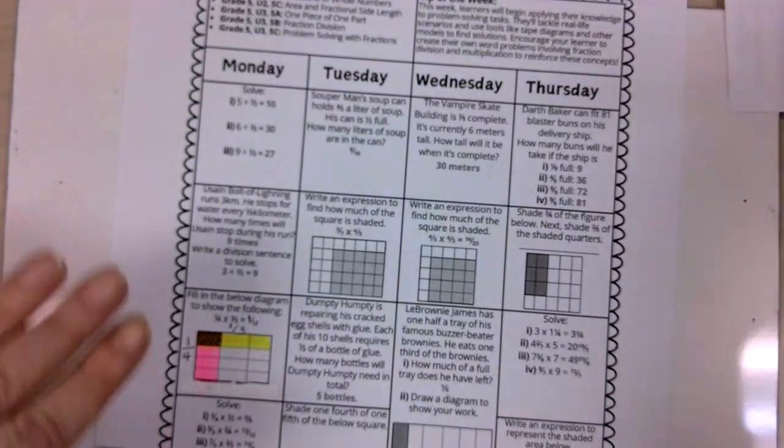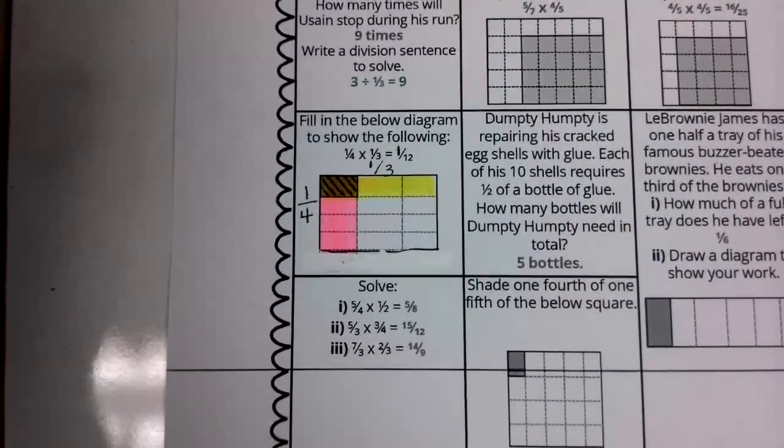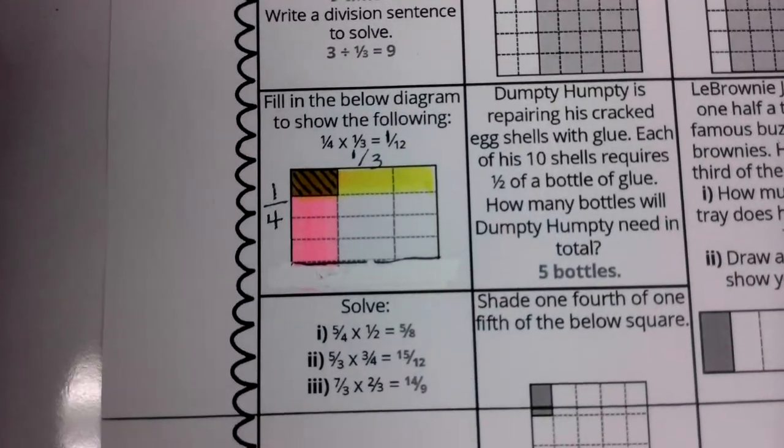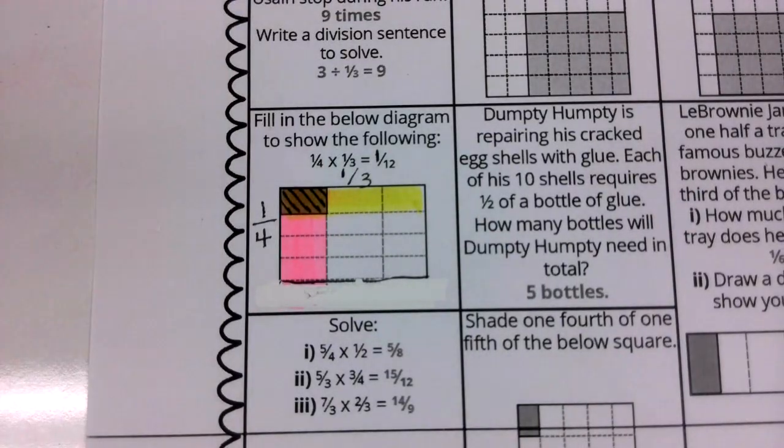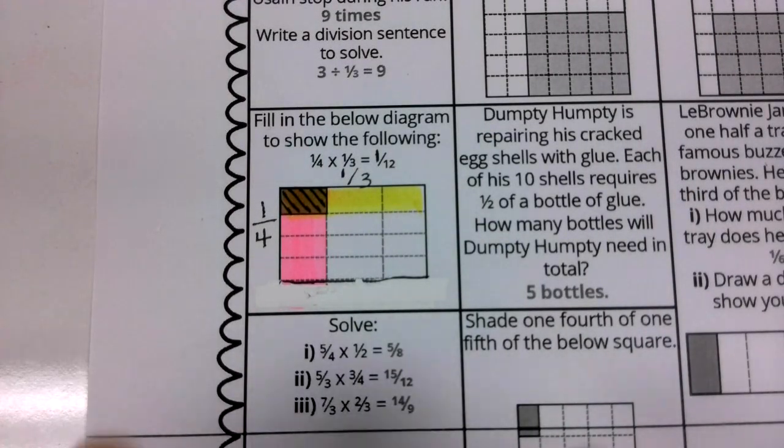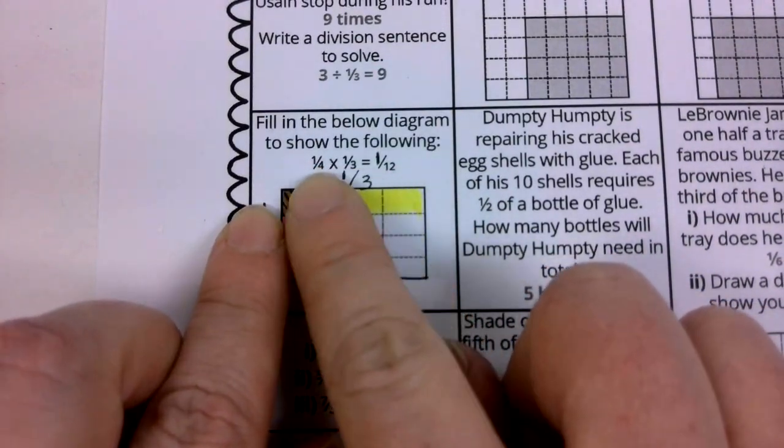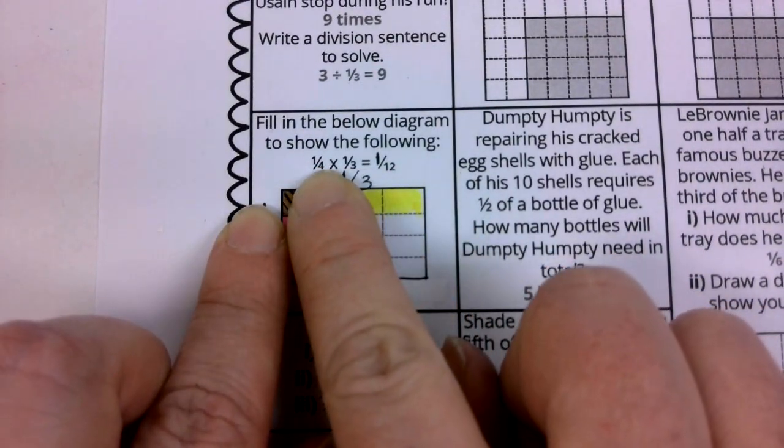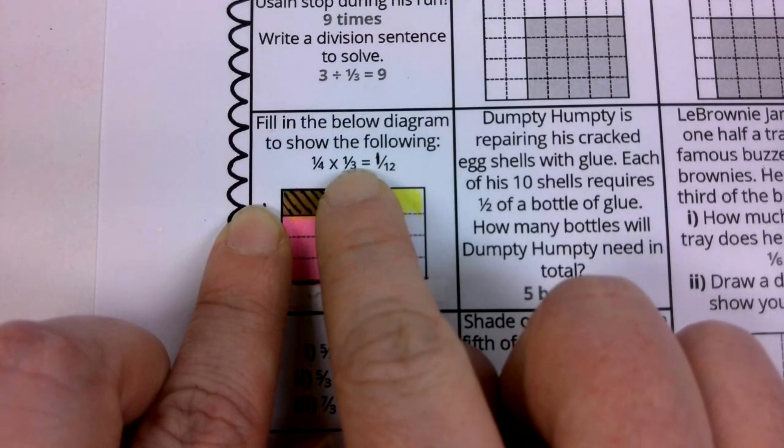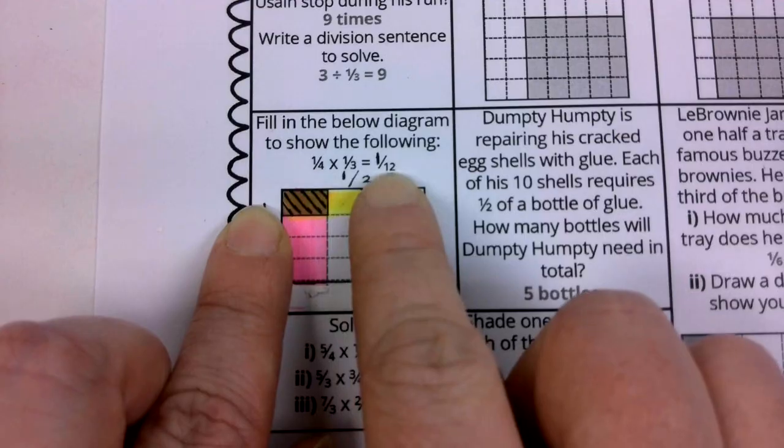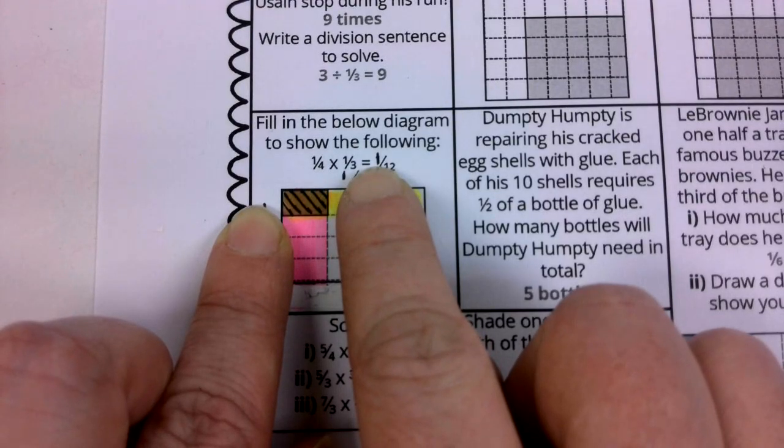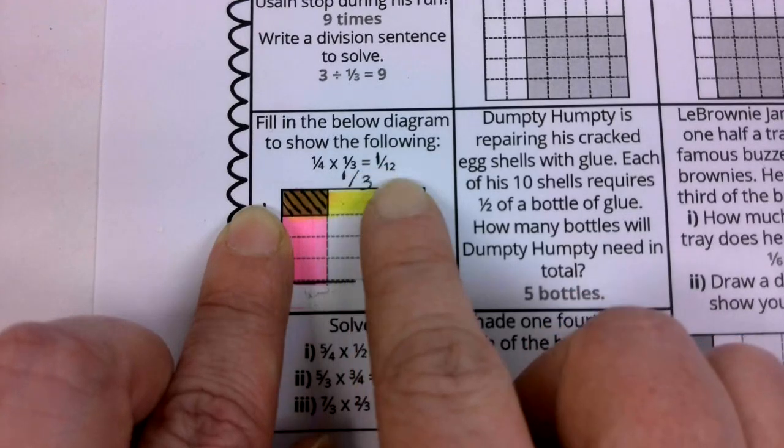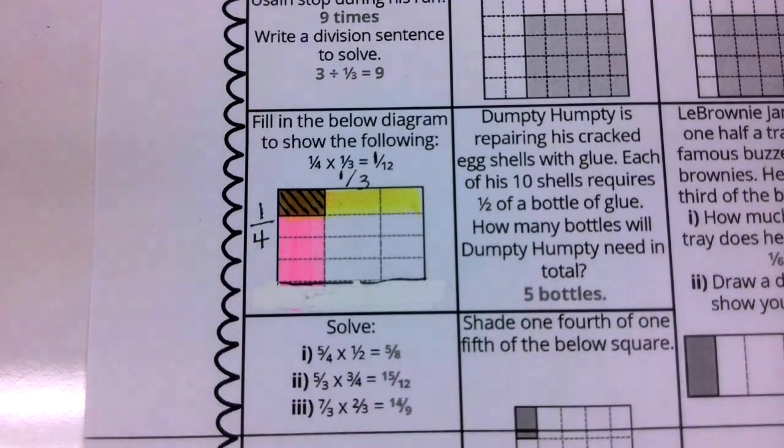For question number three, we have to do a little editing. The person that created this sheet actually partitions the whole incorrectly. So let me show you what we can do to fix that. First of all, when I have these two factors, remember one of these factors I'm going to show in rows and one of these factors I'm going to show in columns. Then the answer is going to be how many of those rectangles have both shading out of how many total rectangles I find in the entire shape. Let me explain that a little further.